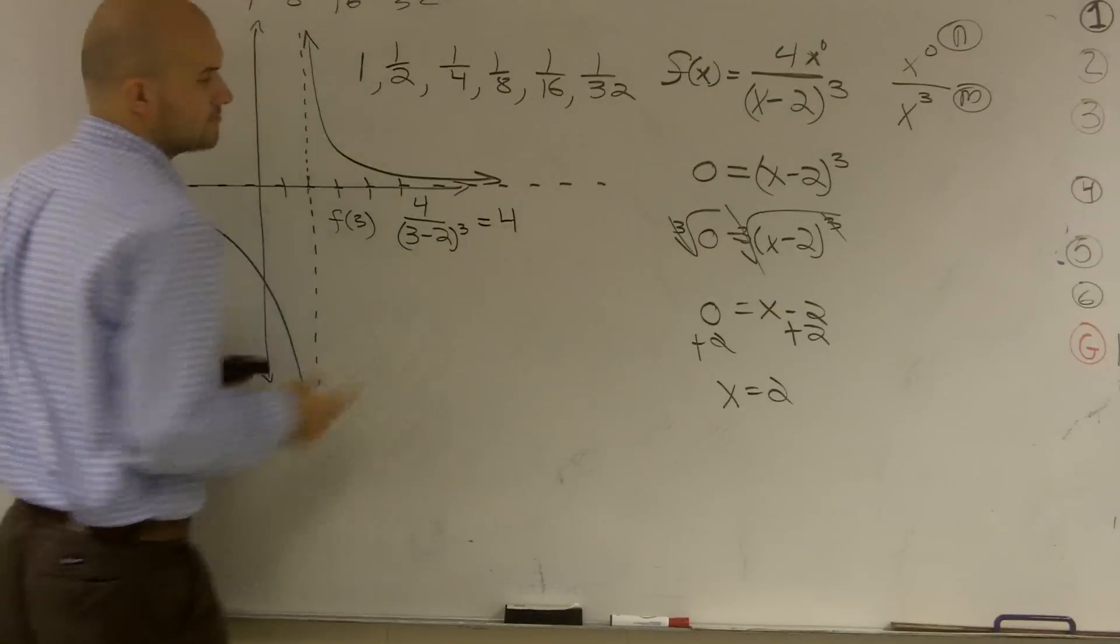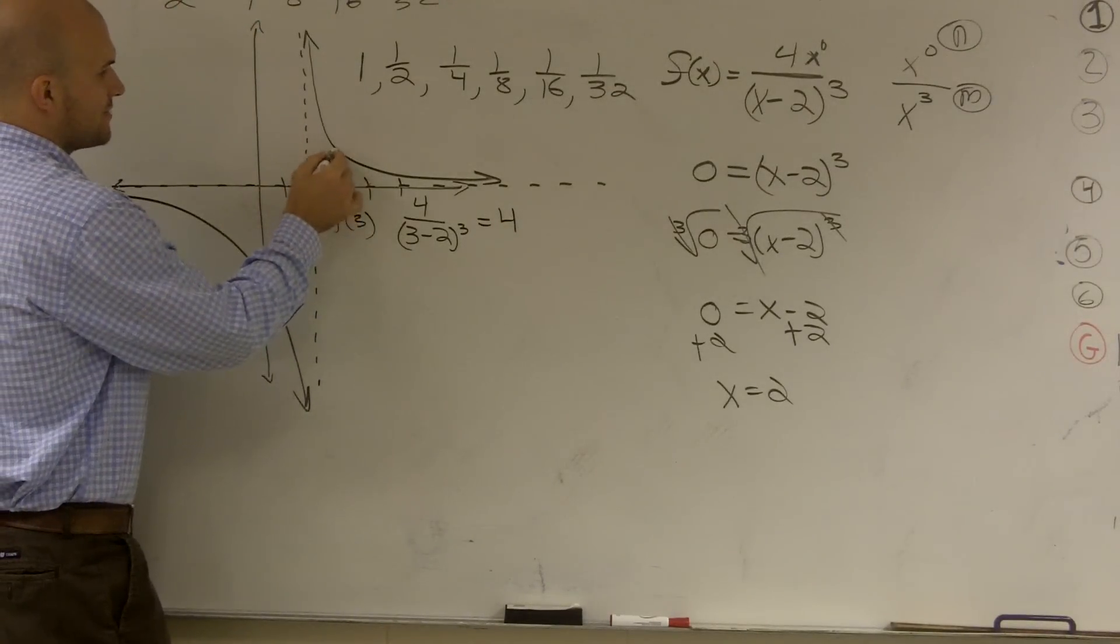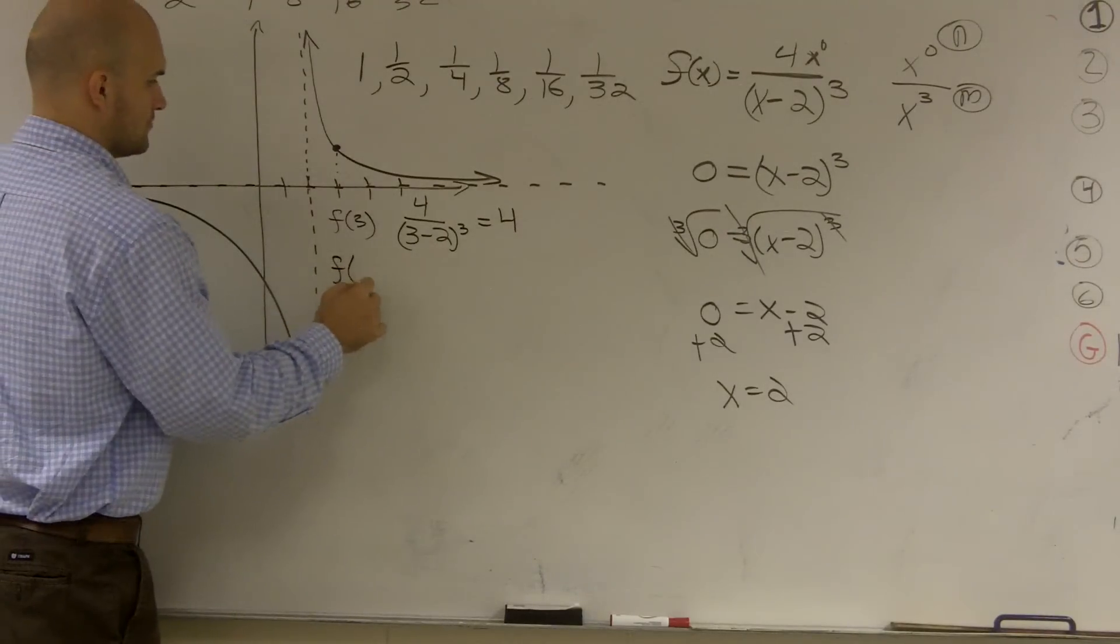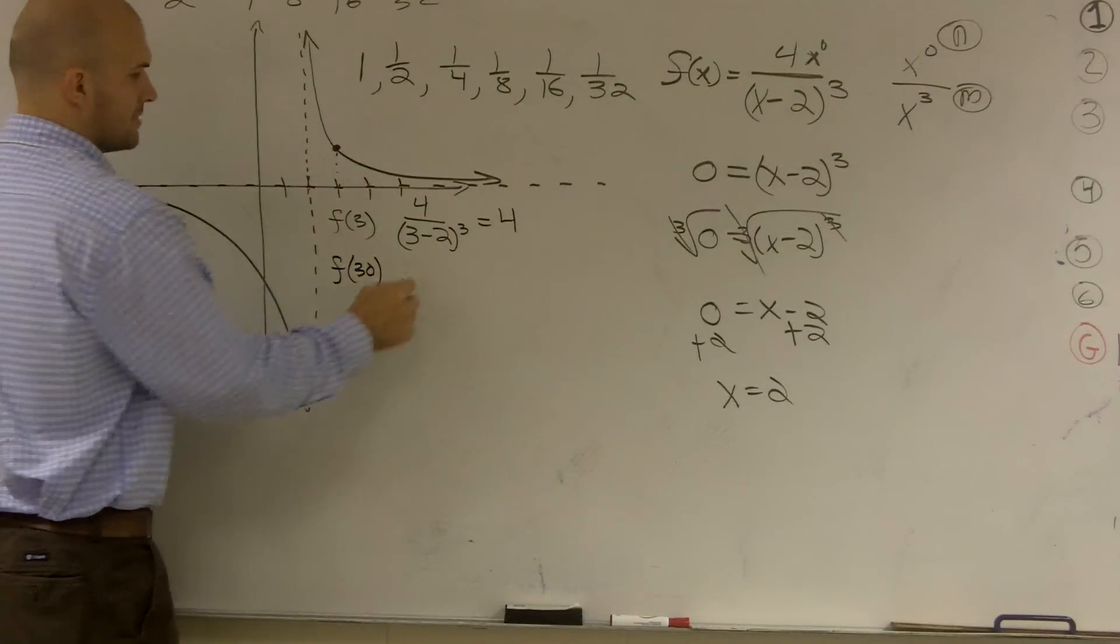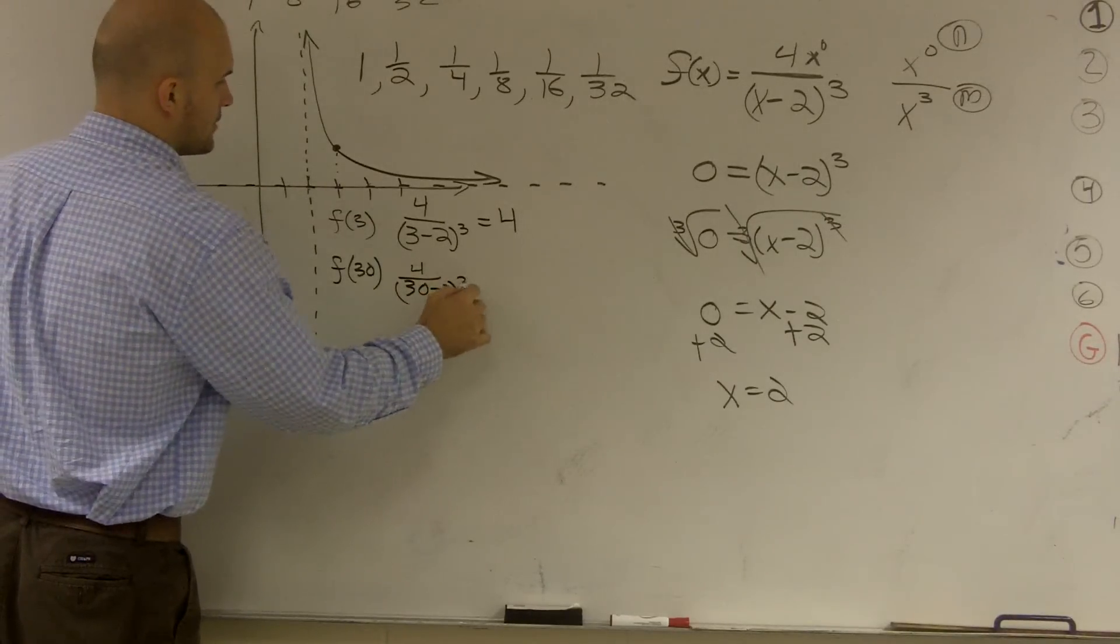Okay? So as I go over one, two, three, let's say one, two, three, four. Now let's do f of 30. Okay? So it's four over 30 minus two cubed.